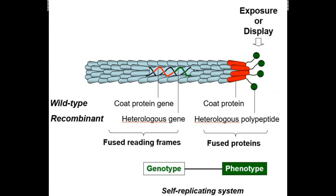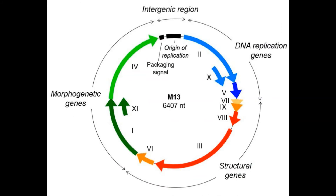The basic genome structure within the circular DNA is composed of four units. First is the intergenic region, which consists of the packaging signal and the origin of replication. The packaging signal tells the phage when it is time to mature and be extruded from the cell, while the origin of replication helps the phage integrate and begin replicating inside E. coli.